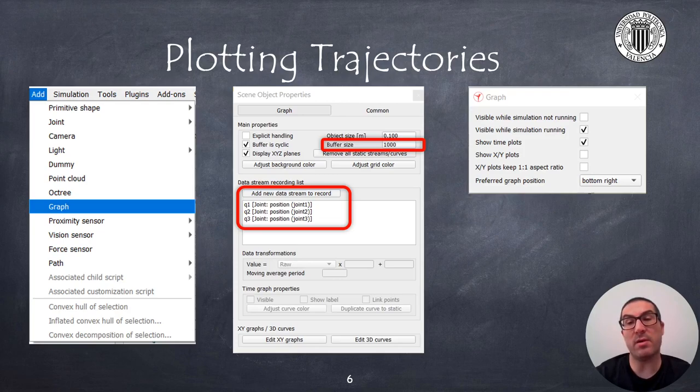You can also create a second graph to show the joint velocities by adding in the data stream not the joint position but the joint velocity.